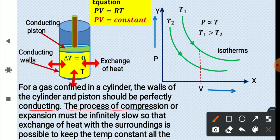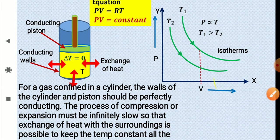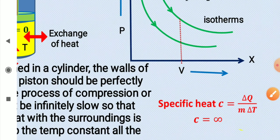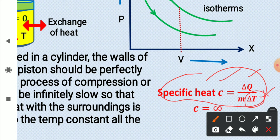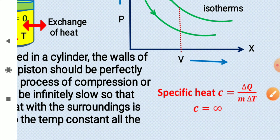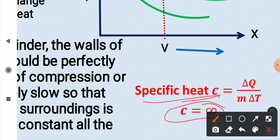For an isothermal process, the compression or expansion must be extremely slow so that heat exchange with the surroundings is possible to keep the temperature constant at all times. Also, since specific heat C = ΔQ/(m·ΔT) and ΔT = 0 here, the specific heat for an isothermal process is infinite — you can supply any amount of heat without changing the temperature.